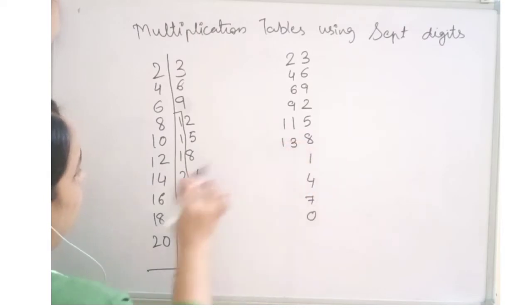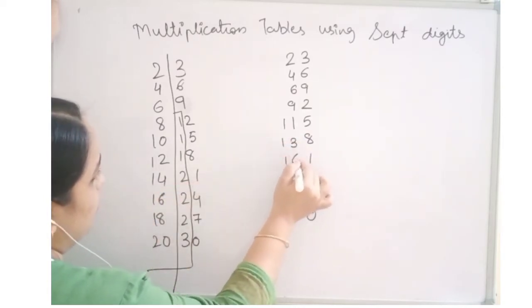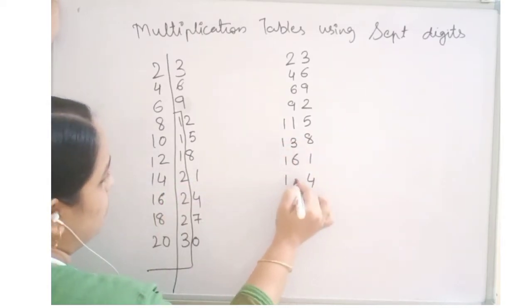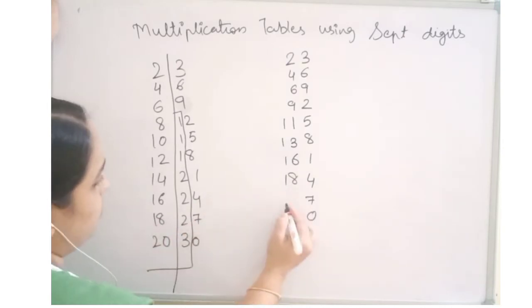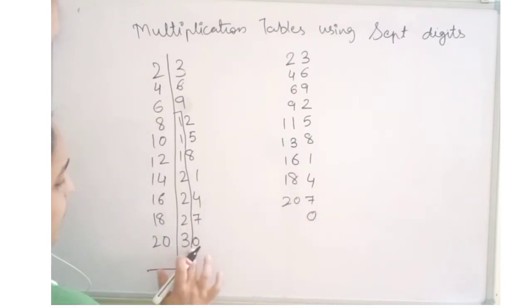14 plus 2 is 16, 16 plus 2 is 18, 18 plus 2 is 20, 20 plus 2 is 23. This is the multiplication table for 23.